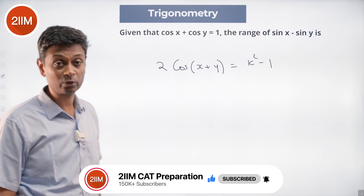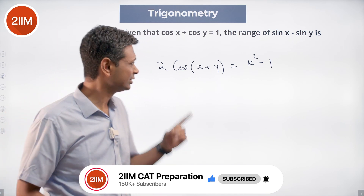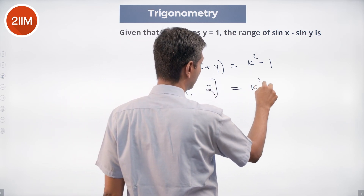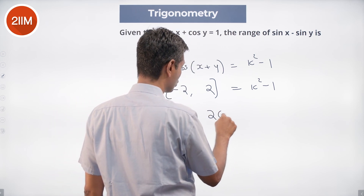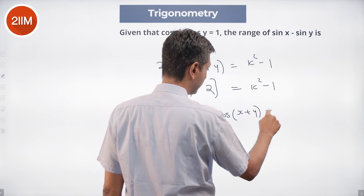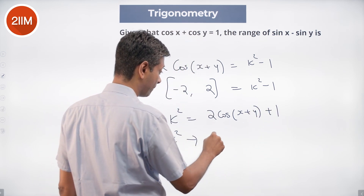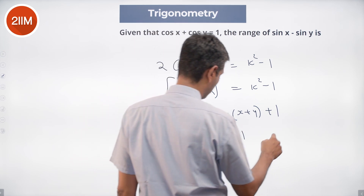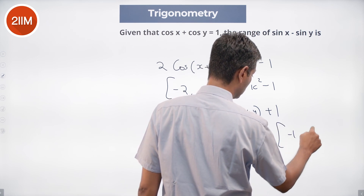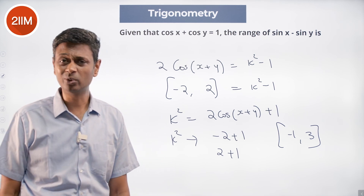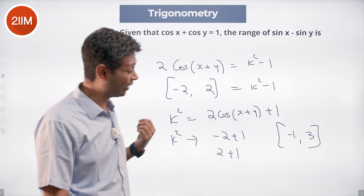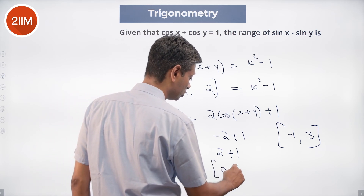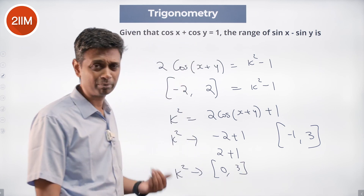So 2 cos(x+y) equals k² minus 1. Since cos(x+y) ranges from -1 to +1, we get: k² minus 1 ranges from -2 to +2, so k² ranges from -1 to 3. But k² cannot be negative, so k² ranges from 0 to 3.